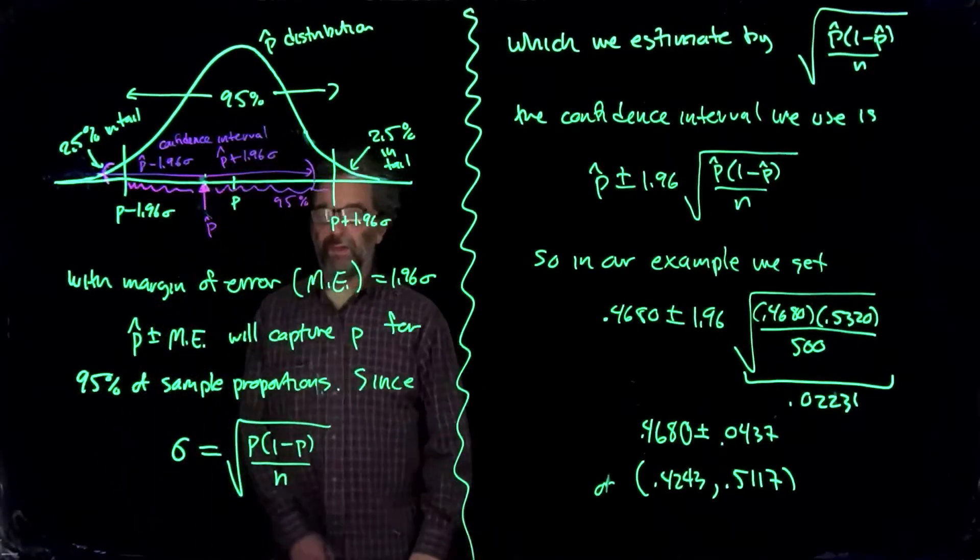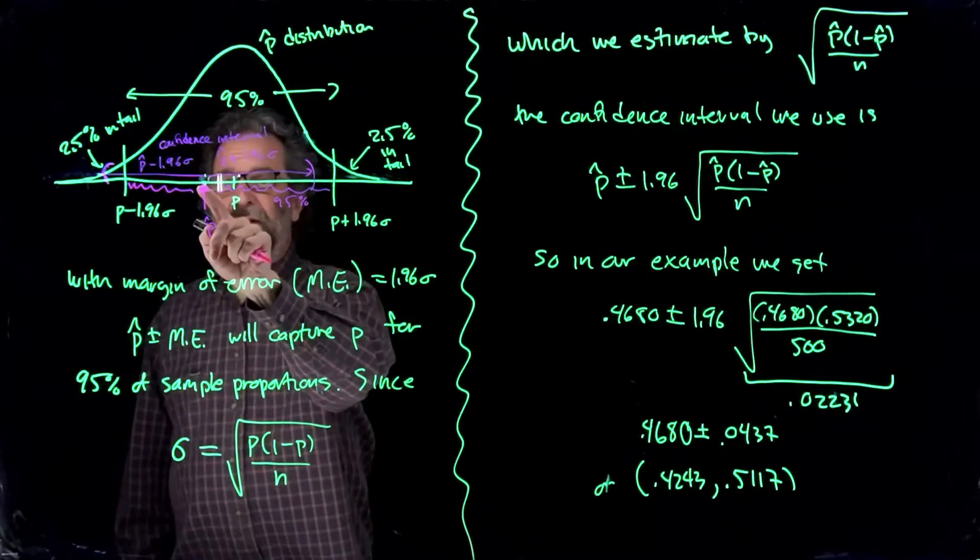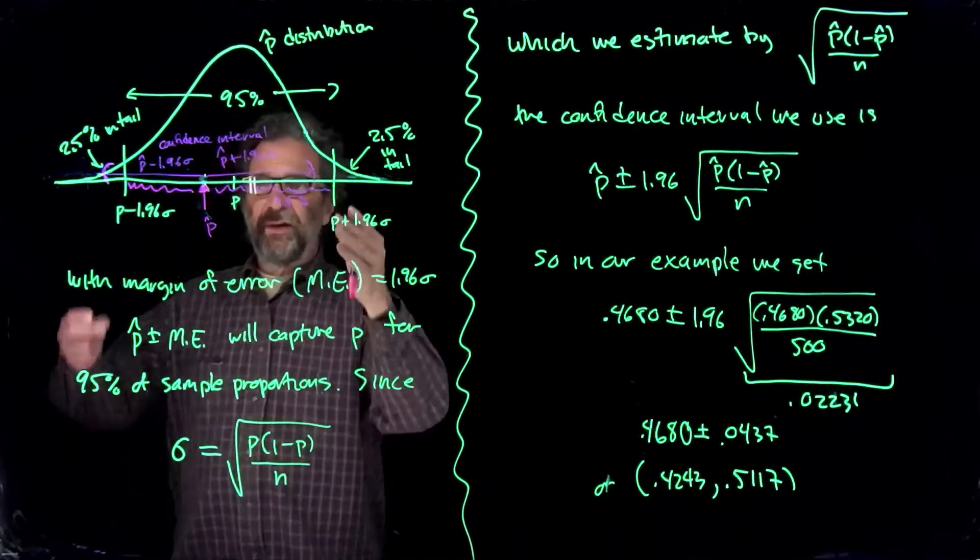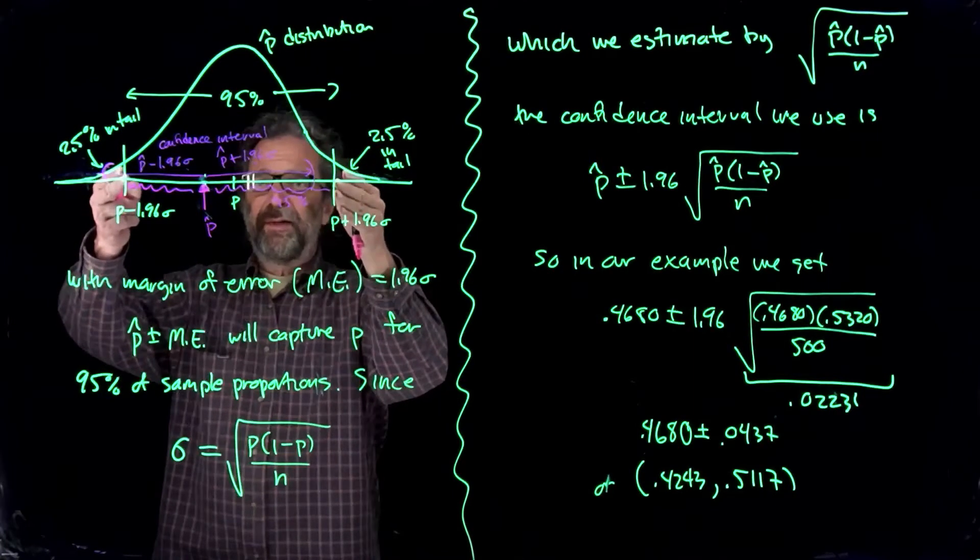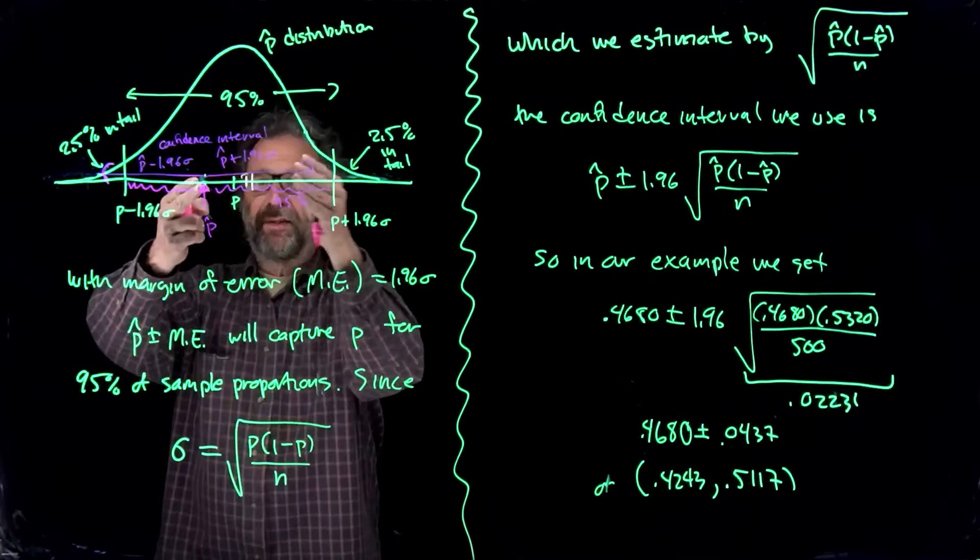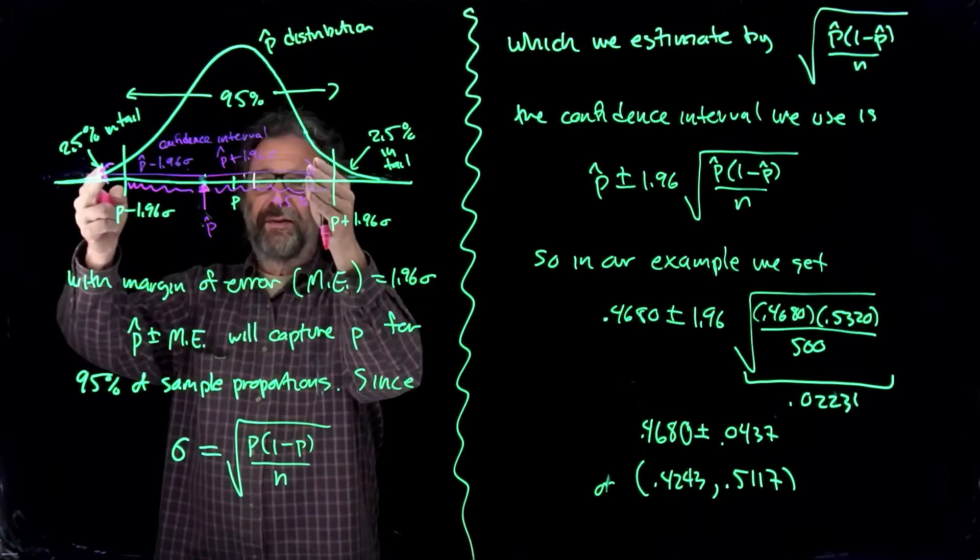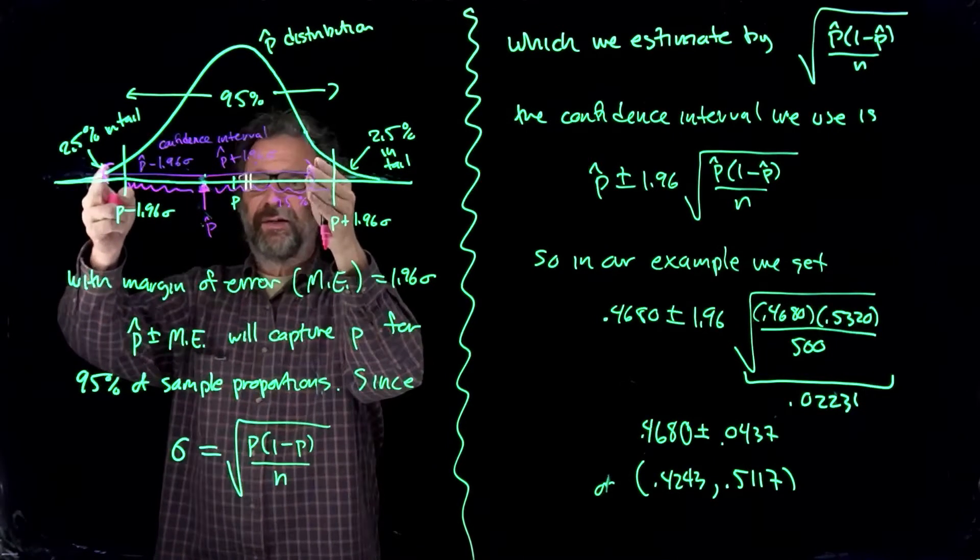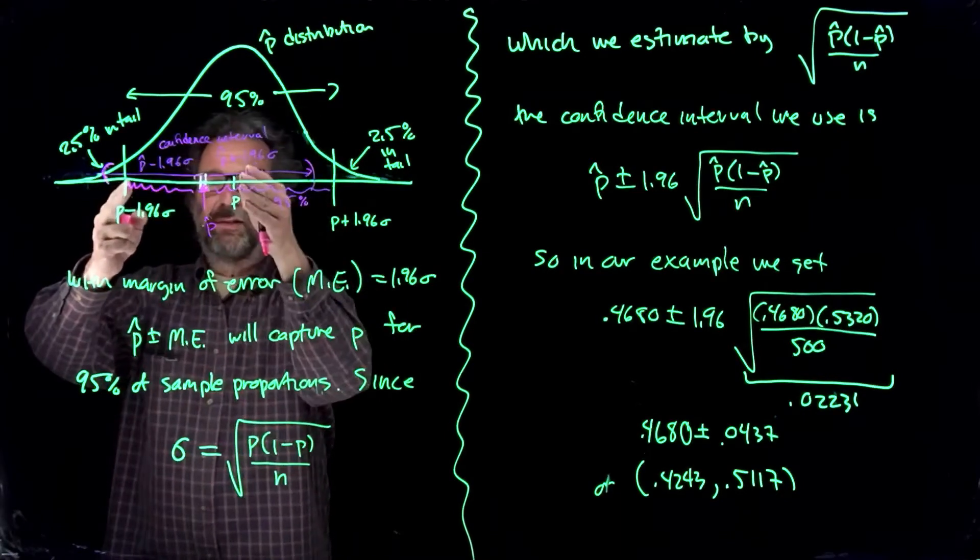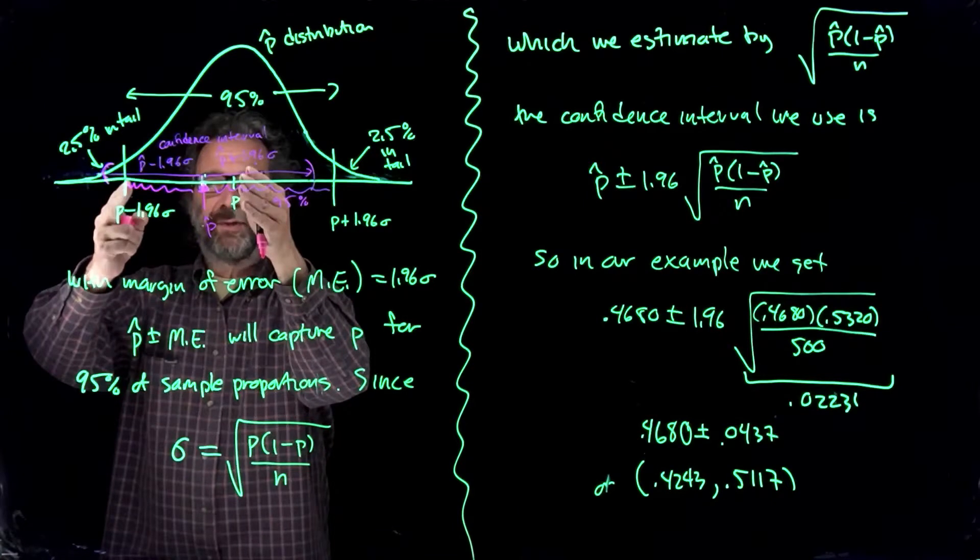Like that. And if we took one of them, say this one here, and we add or subtract 1.96 sigma, as long as you're within 1.96 sigma of p, then if you take it and add or subtract 1.96 sigma like this, then one of those directions will reach out and capture p in the interval. So as we get closer and closer to the edge, we get closer and closer to not capturing p.